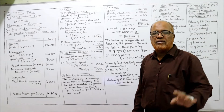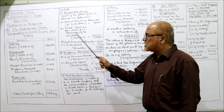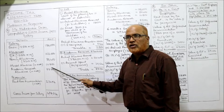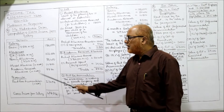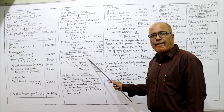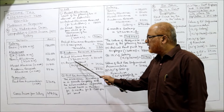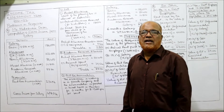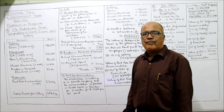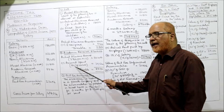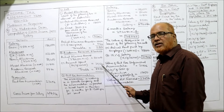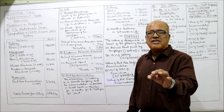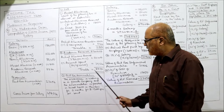Taxable hostel allowance is 10,800 — take this amount in the main computation. For academic research allowance: amount received = 3,700 into 12 = 44,400. Amount spent = 80% of 44,400 = 35,520. Unspent taxable amount = 44,400 minus 35,520 = 8,880. This 8,880 is taxable — take this in the main computation.